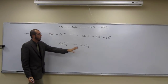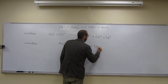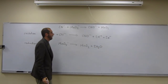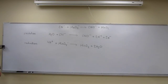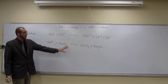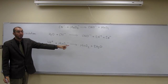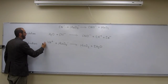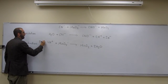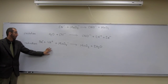Over here for the reduction half-reaction, we add two H₂O's and four H⁺. Are all of our atoms balanced? Yes. But our charges aren't, because we've got zero over there and plus three over here. So we're going to have to add three electrons. Notice we're adding electrons, so this is the reduction.